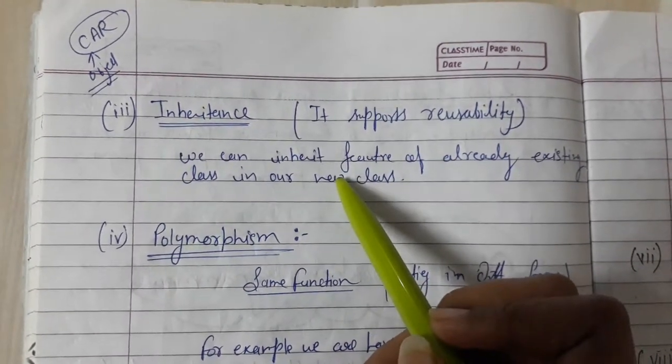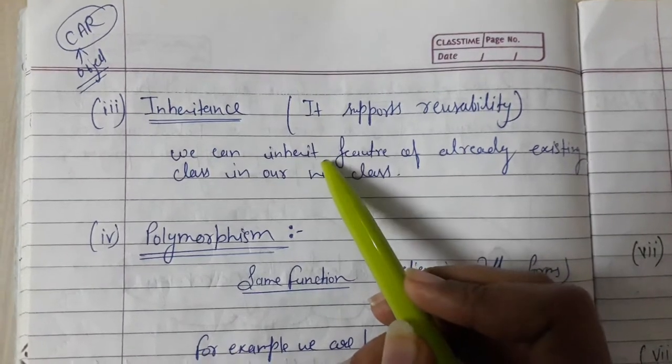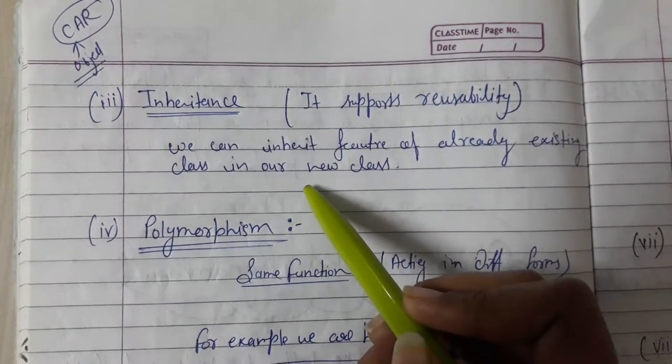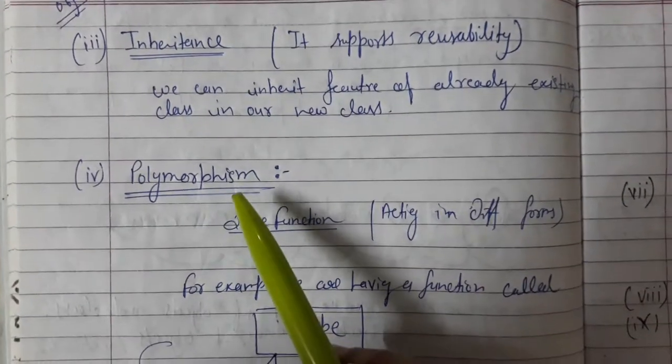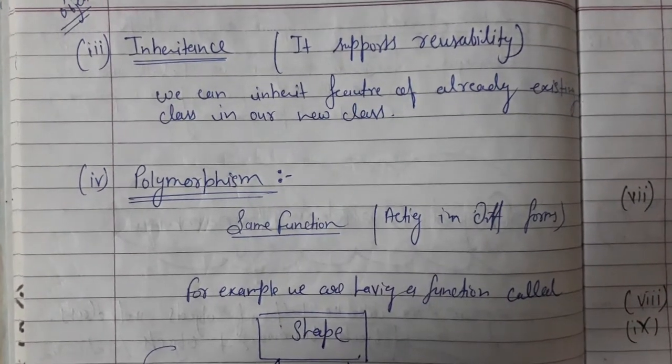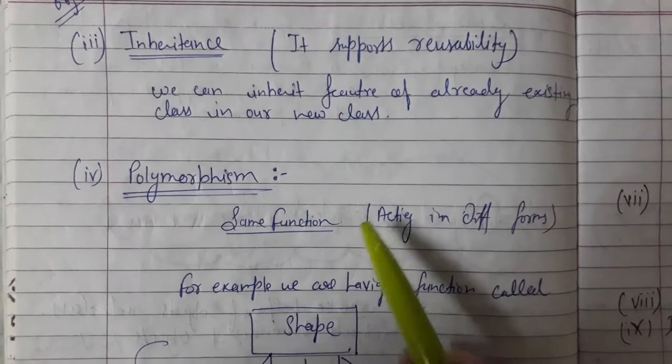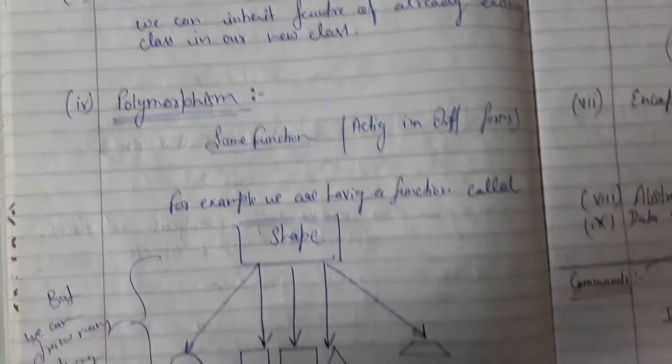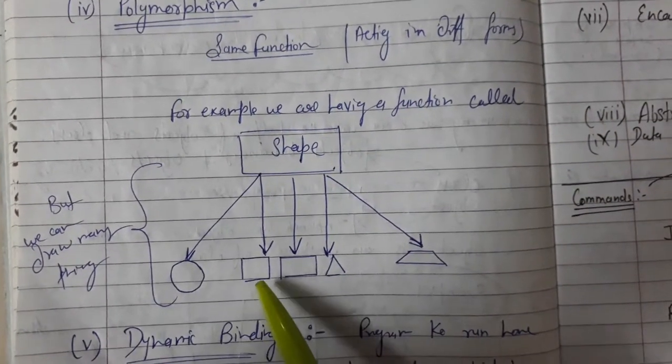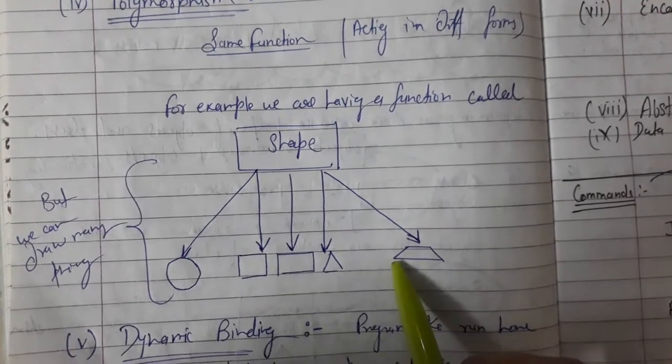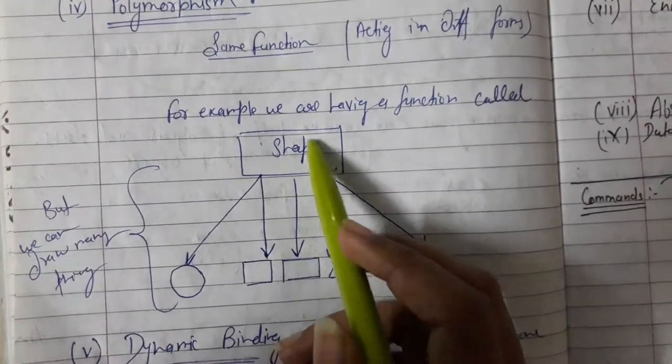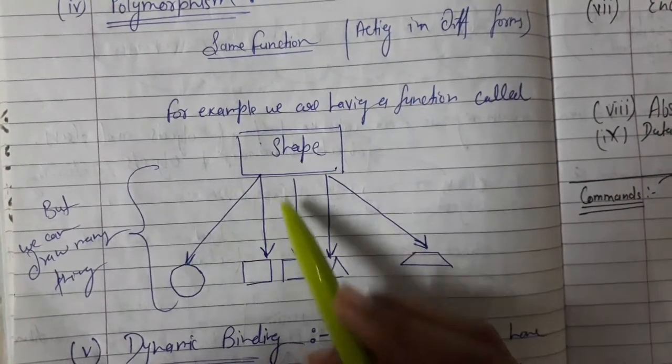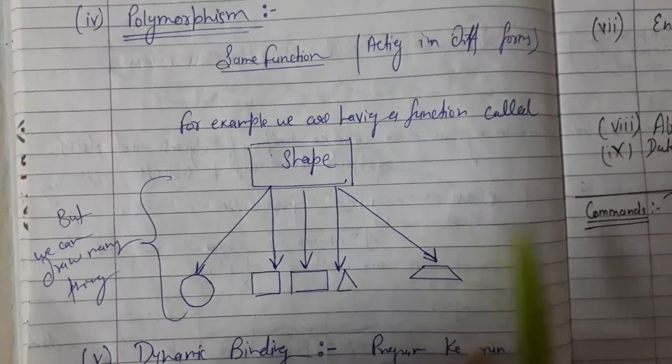We can inherit the superclass features in the subclass. Polymorphism means more than one form exists for the same function. Like shape - we can do shape like circular, square, rectangular, triangle, trapezoid. This is one method but different forms exist. This is polymorphism.